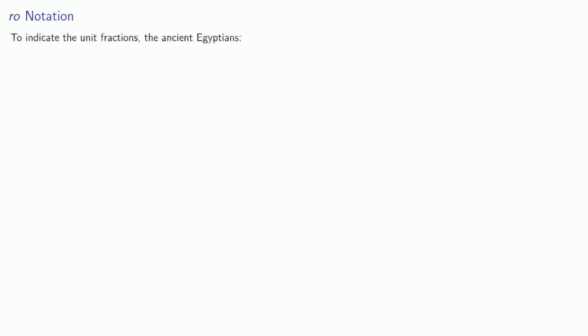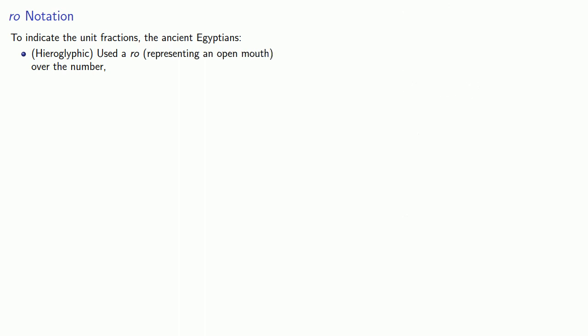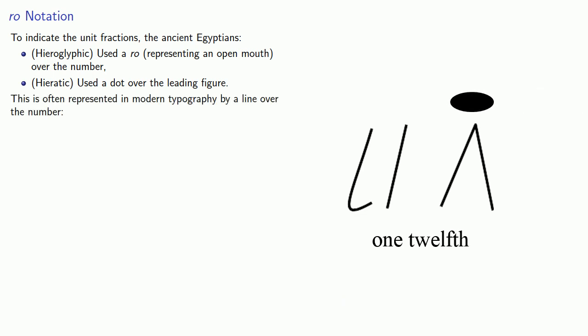To indicate these unit fractions, the ancient Egyptians did one of two things. In hieroglyphic, they used a row — which represents an open mouth — over the hieroglyphic number. So this represents ten, but if I put a row over it, it represents one tenth. The more commonly used hieroglyphic had a dot over the leading figure. These hieroglyphic conventions are often represented in modern typography by a line over the number. So if I want to write the fraction one third, I write a three with a line over it.